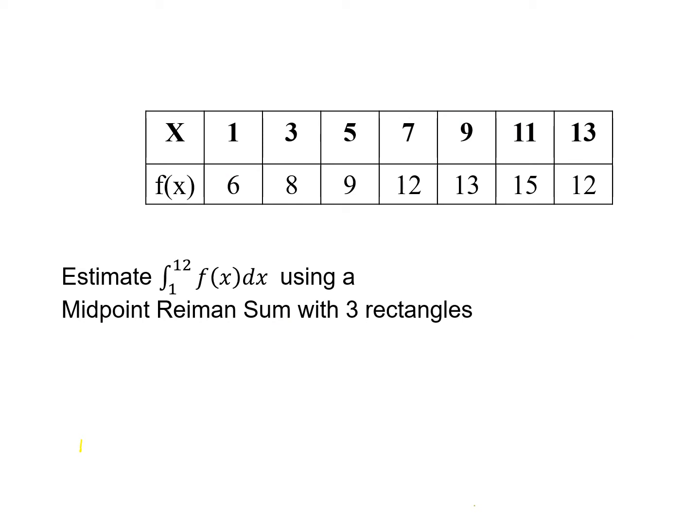Now, using a midpoint Riemann sum is a little different. Notice with the midpoint Riemann sum, I'm saying we're going to use three rectangles. So this is how we choose our rectangles from here to here, because we have to have a middle point is one rectangle. From here to here would be my second rectangle. And then we'll get a yellow one. This would be my third rectangle. So my midpoint would be 8, 12, 15.